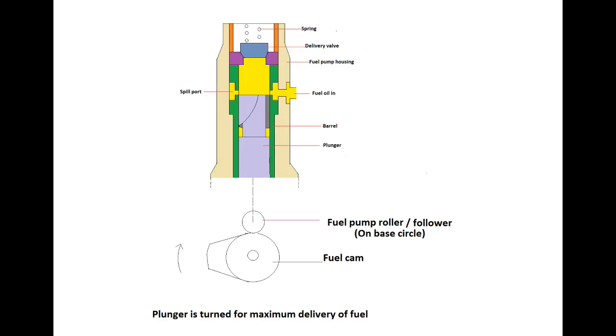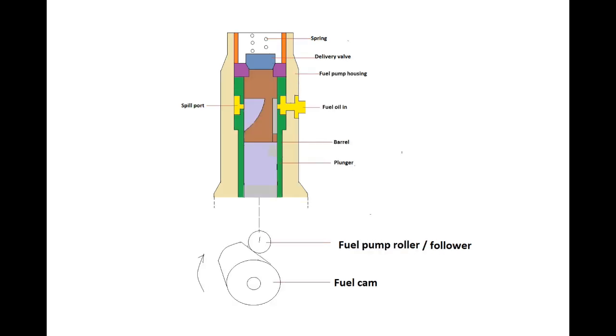Here the plunger is turned for maximum delivery of fuel and the fuel pump roller is on the base circle of the cam. Fuel from the supply pump flows through the suction spill ports in the barrel and fills the space above the plunger. It also fills the space of helical, circumferential and no load grooves. As the cam rotates the follower moves up and the plunger is lifted upwards.